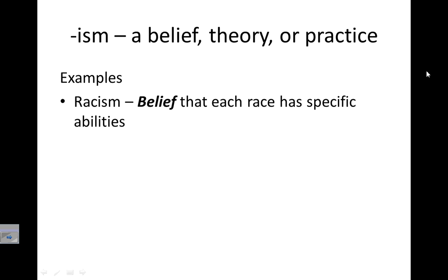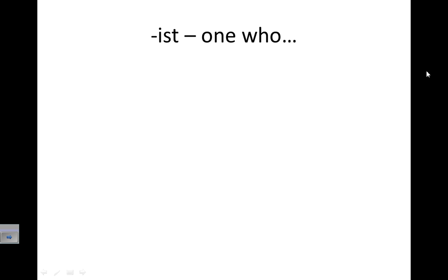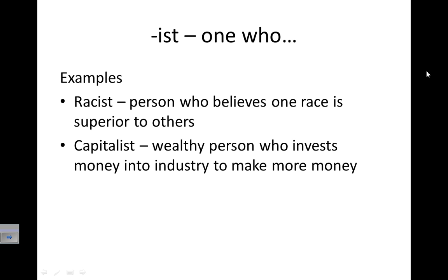Racism is the belief that each race has specific abilities. Capitalism — one you'll be learning about today — is a belief, focus, or practice on using money or capital and trading money and property. The suffix '-ist' means 'one who.' A racist is a person who believes one race is superior to others. A capitalist is a wealthy person who invests money into industry to make more money. An artist is one who does art.